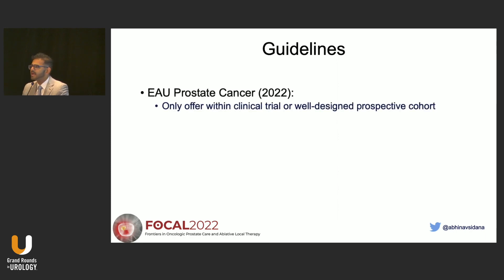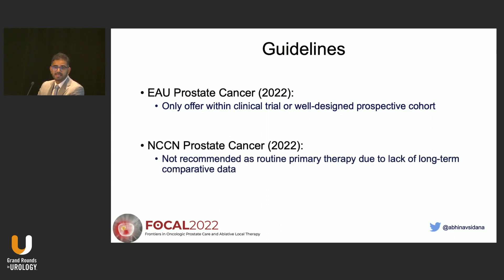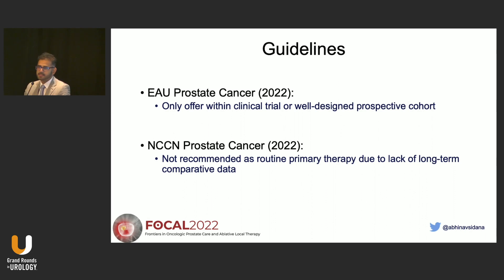Let's see what the guidelines say about selection. EAU says that focal therapy should only be offered within a clinical trial or prospective cohort, with no discussion about selection criteria. NCCN doesn't even recognize focal therapy as a primary treatment for prostate cancer. So none of the guidelines give us any information about which patient would be best suited for focal therapy.